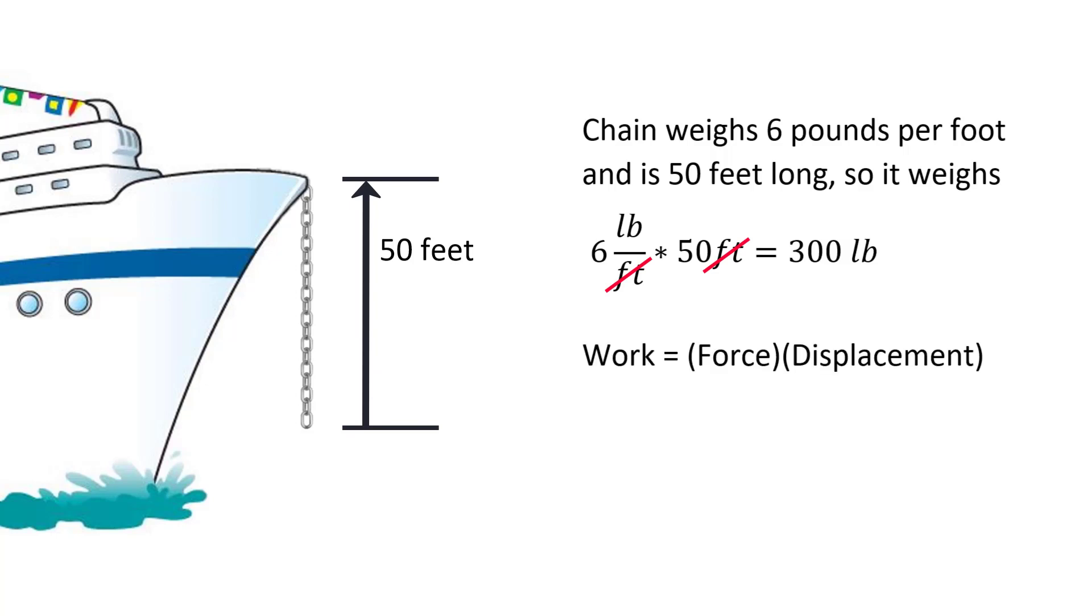Now we just multiply that weight by the distance the chain moves, and we're done. How far does the chain move? That's the tricky part. The link at the bottom moves 50 feet. The link at the top barely moves at all. There's a link in the middle that moves 25 feet. There is no one distance that the entire chain moves. That's why the chain is more complicated than the anchor.